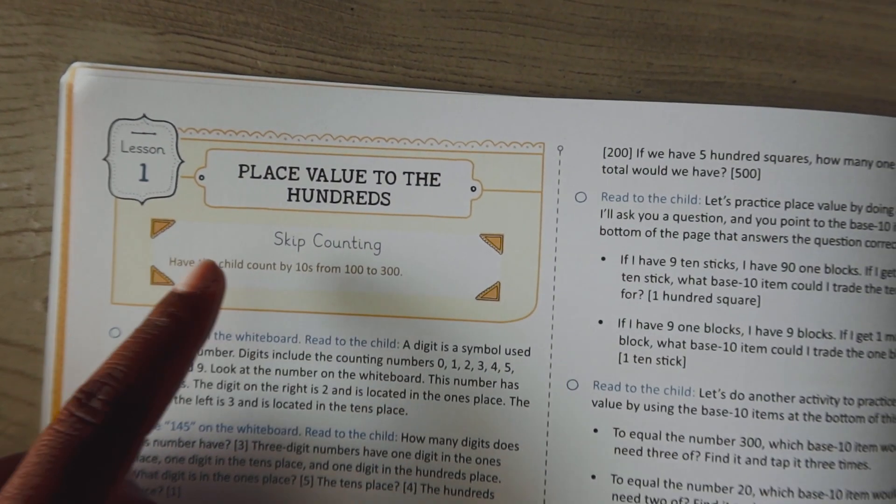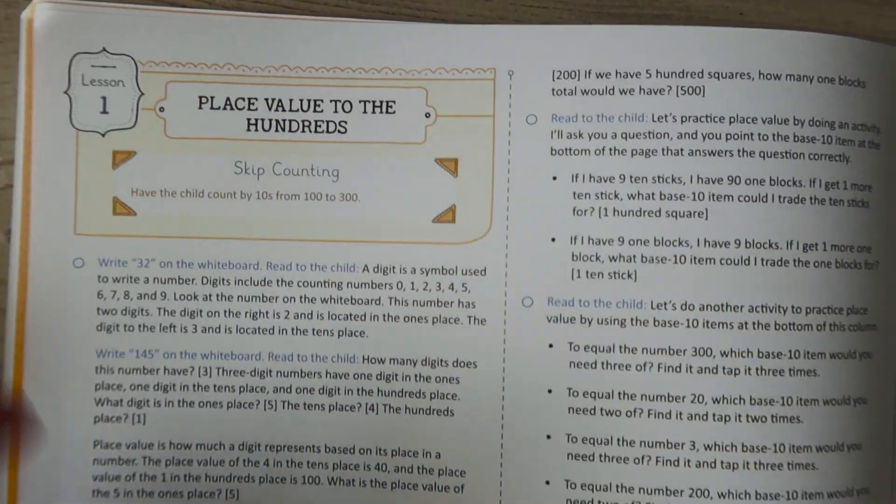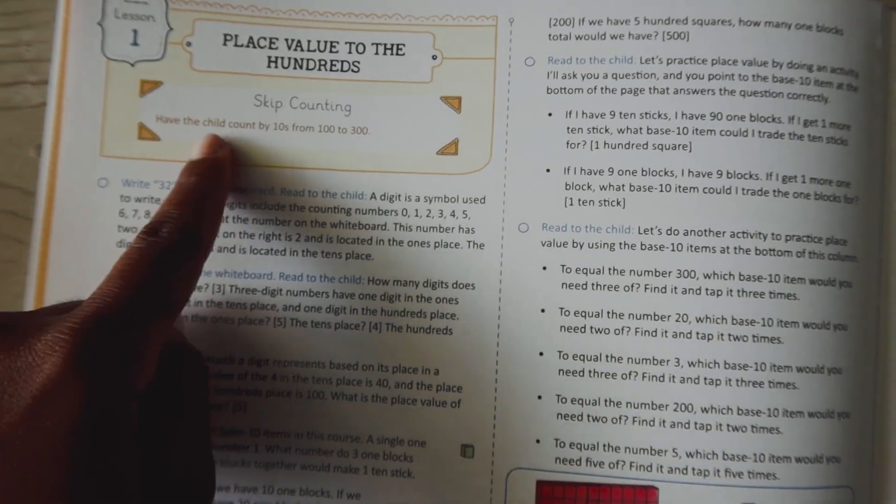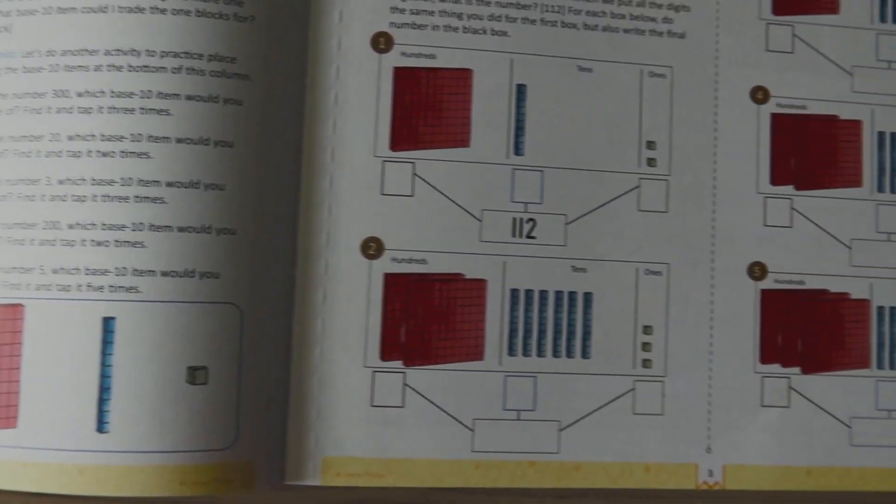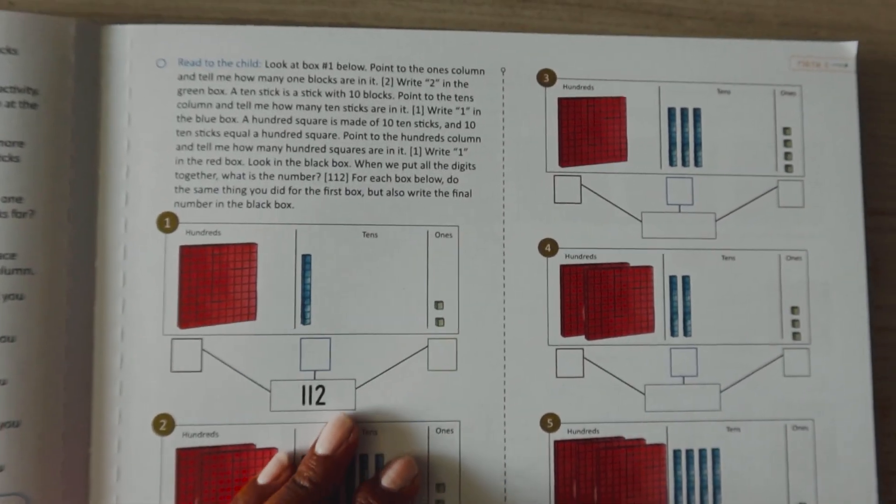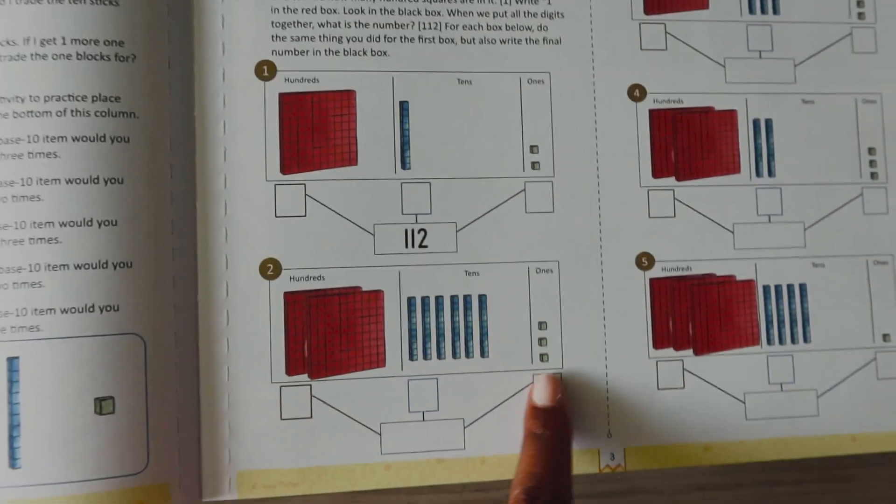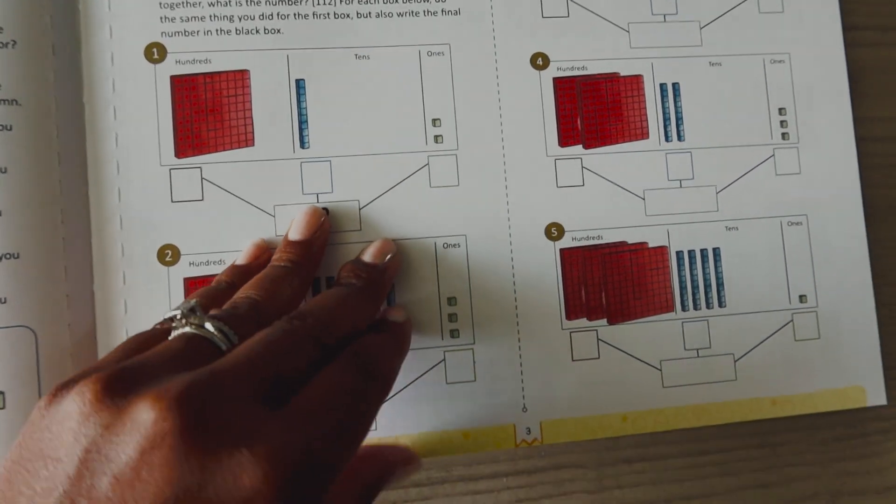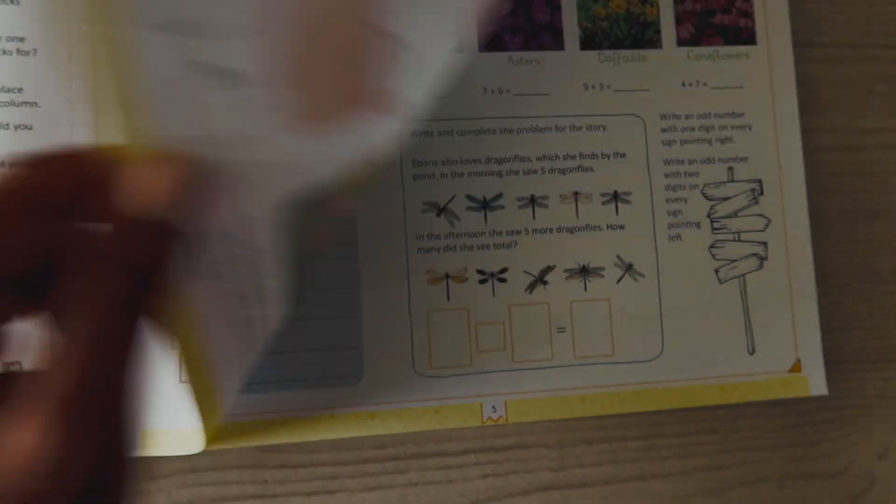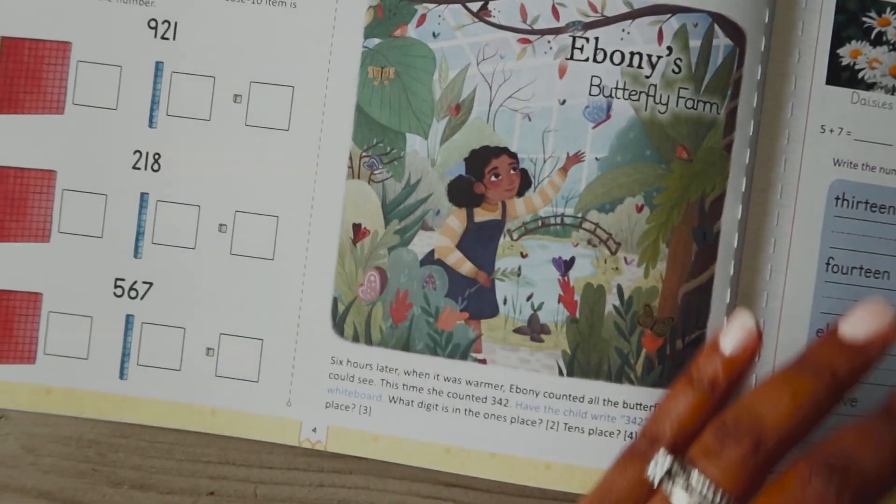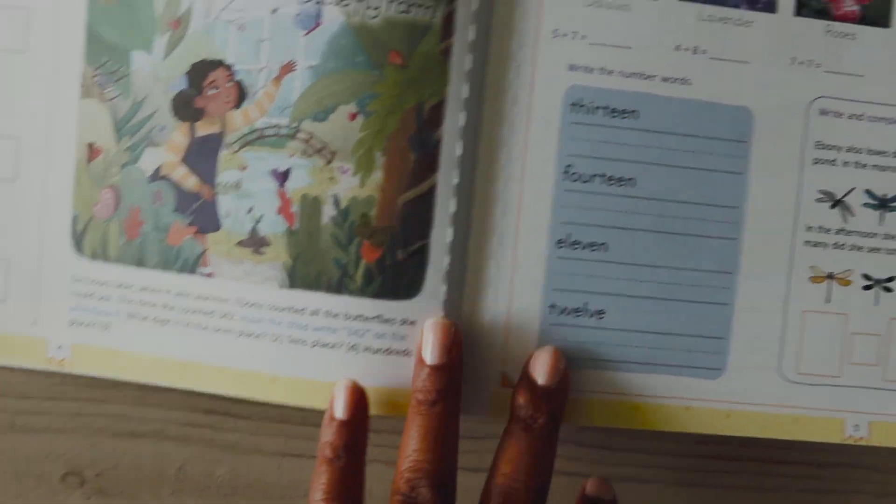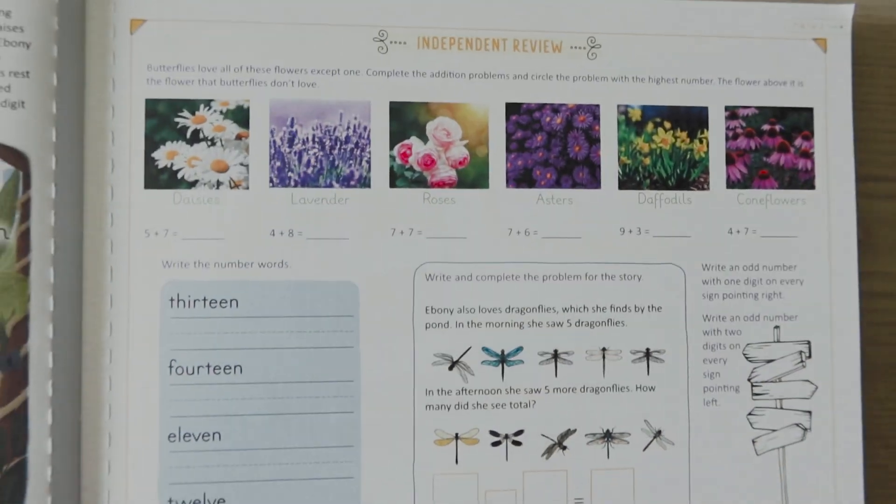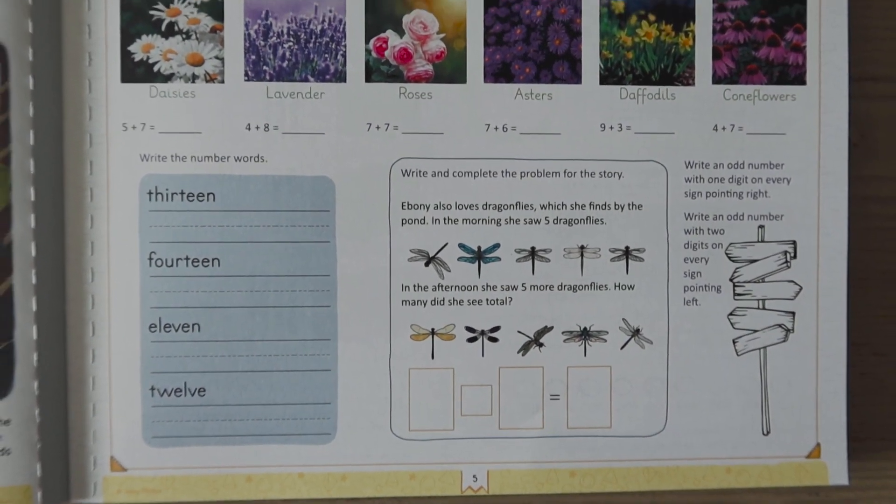Right here is the review. This is what you want them to have mastered before you move on. If they've mastered it then you skip this. Okay and then you move on. So then you read all this to them. I actually have these blocks so that'll be good. But it's things like that. If you want to get those you can look ahead and order them. If you don't that's okay. So again this is all reading to the child and then this would be independent review.